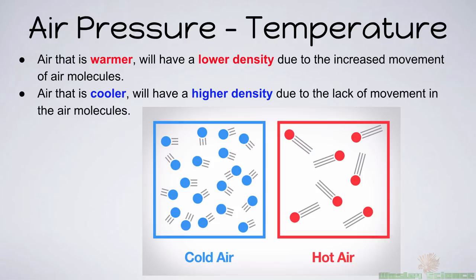Air that is warmer will have a lower density due to increased movement of air molecules, and air that is cooler will have a higher density due to less movement. Hot air moves more and is more spread out; cool air moves less and gets closer together. That's basically why we have weather — there's always a different temperature on the surface as the sun comes up and down in our 24-hour rotation. That creates convection currents: hot air rising, cool air sinking, and that exchange is what makes wind.